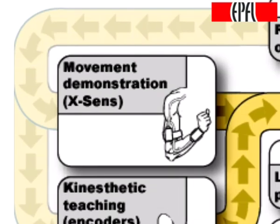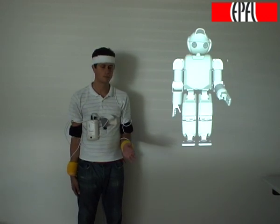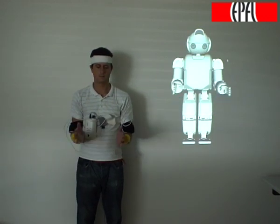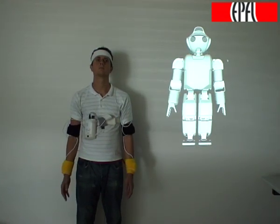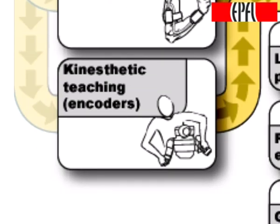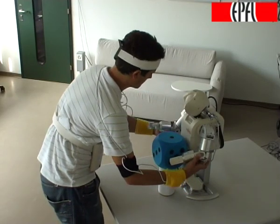We consider different teaching modalities. Firstly, the user performs a demonstration of a gesture while wearing motion sensors recording his upper body movements. Secondly, the user corrects the movement by moving the limbs of the robot to their correct postures through time.